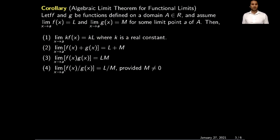An immediate consequence of the previous result is a corollary: by combining the previous theorem with the algebraic limit theorem for sequences, you can prove the algebraic limit theorem for functional limits. Simply combining these theorems gives you four results.